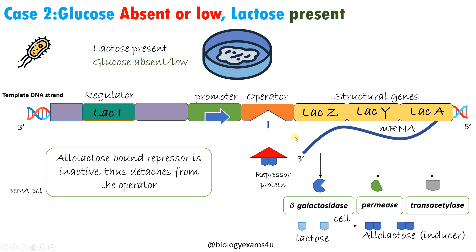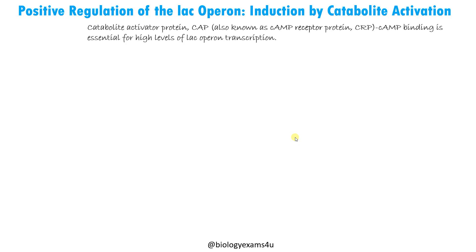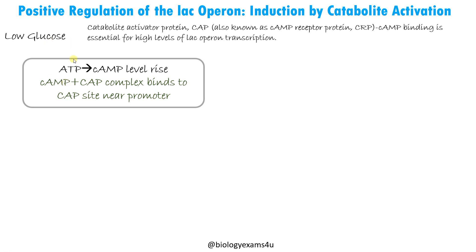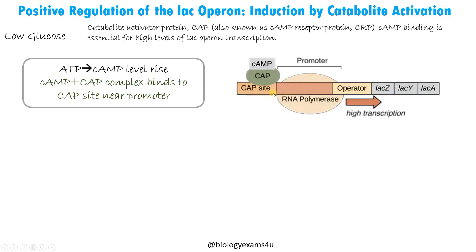The third concept is positive regulation of lac operon, or induction by catabolite activation. Catabolite Activator Protein (CAP), also known as cAMP receptor protein, binds to cAMP. The CAP-cAMP complex binding is essential for high levels of lac operon transcription. In the presence of low glucose, ATP synthesis will be low; ATP inside the cell is converted to cAMP, so there is a rise in cAMP level, signaling glucose deficiency. cAMP binds to CAP, forming a complex that binds to a specific CAP site near the promoter.